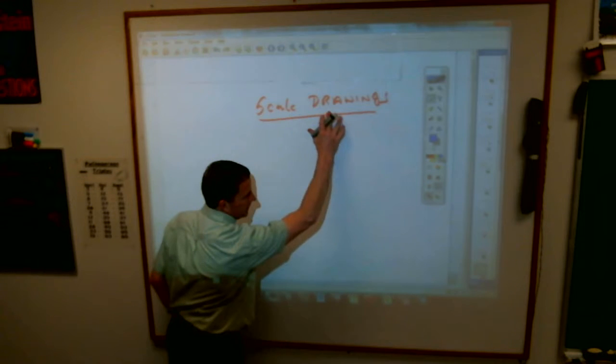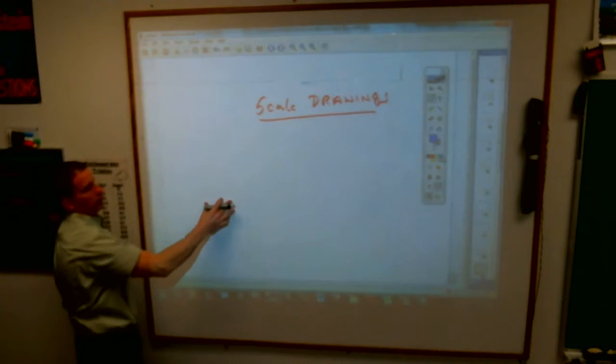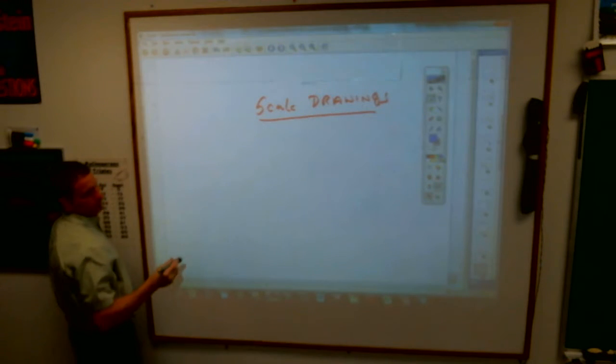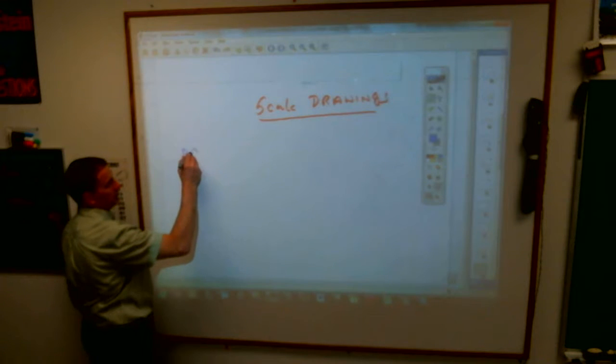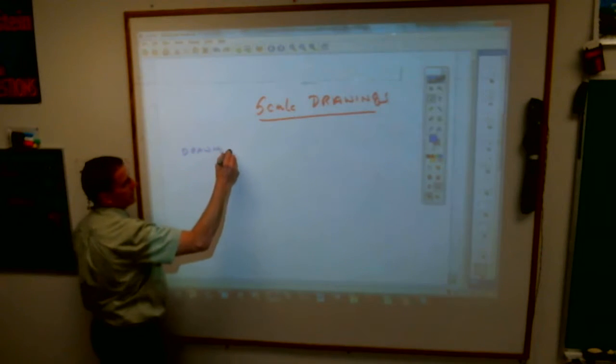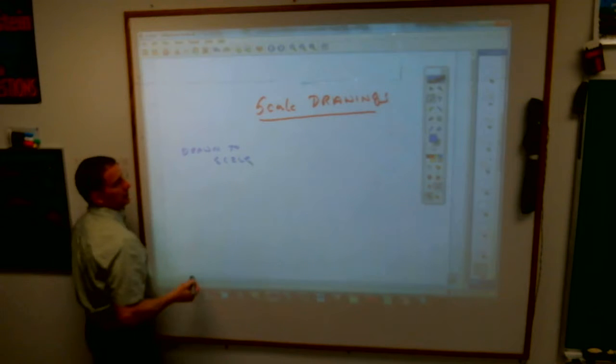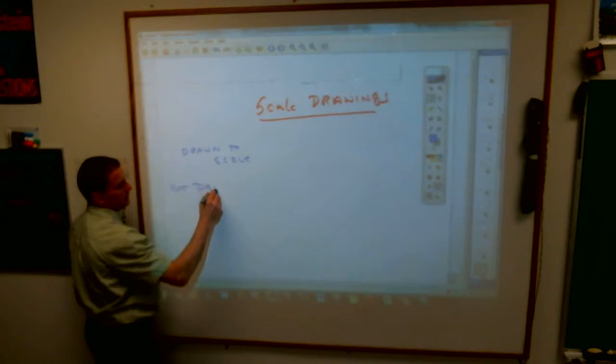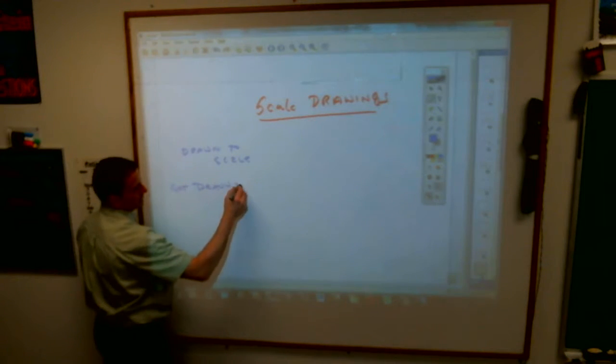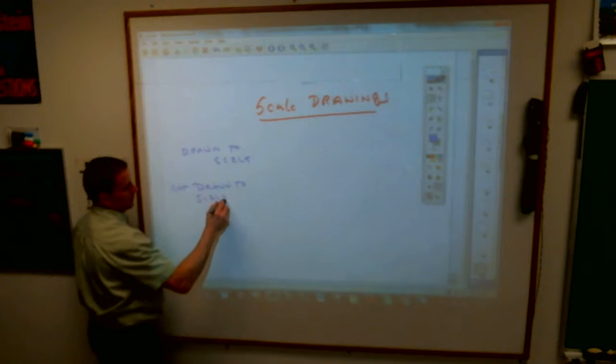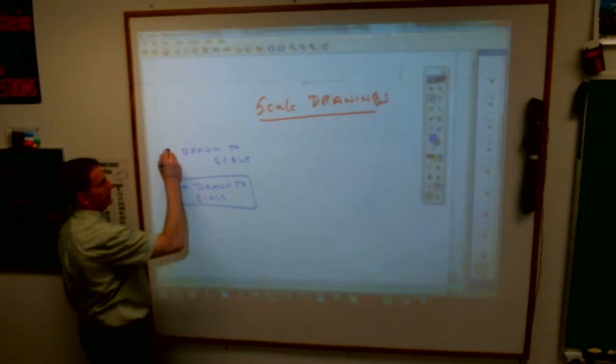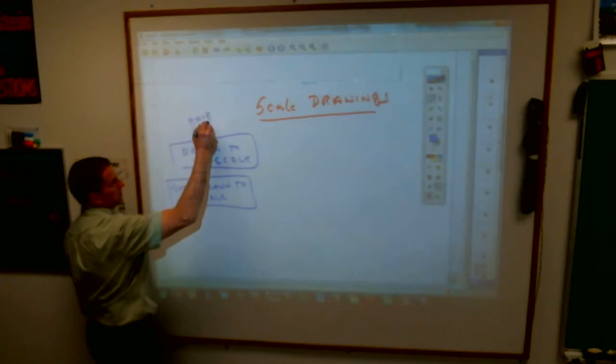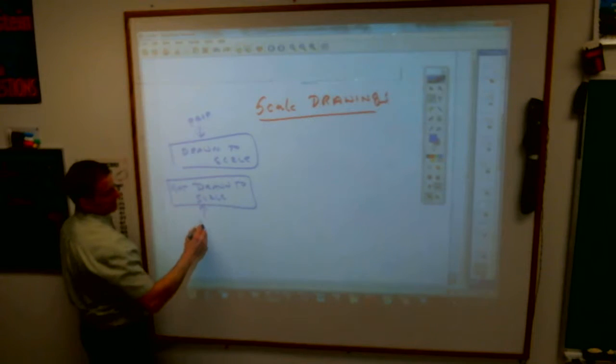When you go to architect school or whatever, drafting school, when you do scale drawings, there's a phrase that you need to understand. One of them is the phrase that says drawn to scale. Or the one you probably really need to watch out for is the phrase that says not drawn to scale. And not always do you have to draw drawings to scale. To scale means that it is proportional. Not drawn to scale means it's not proportional.